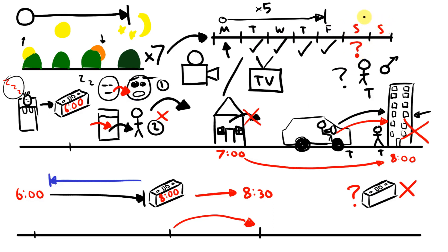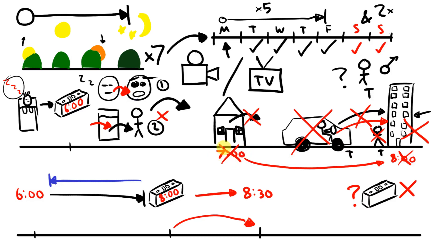Saturday and Sunday are the weekend. These two days are the weekend. On the weekend, on Saturday and Sunday, Tom doesn't have to go to work. He doesn't have to be at work at eight o'clock, so he doesn't have to drive to work. He doesn't have to leave the house at seven o'clock, so he doesn't have to get up at six o'clock. He can stay in bed. On Saturdays and Sundays, he wakes up at eight but stays in bed until eight-thirty.